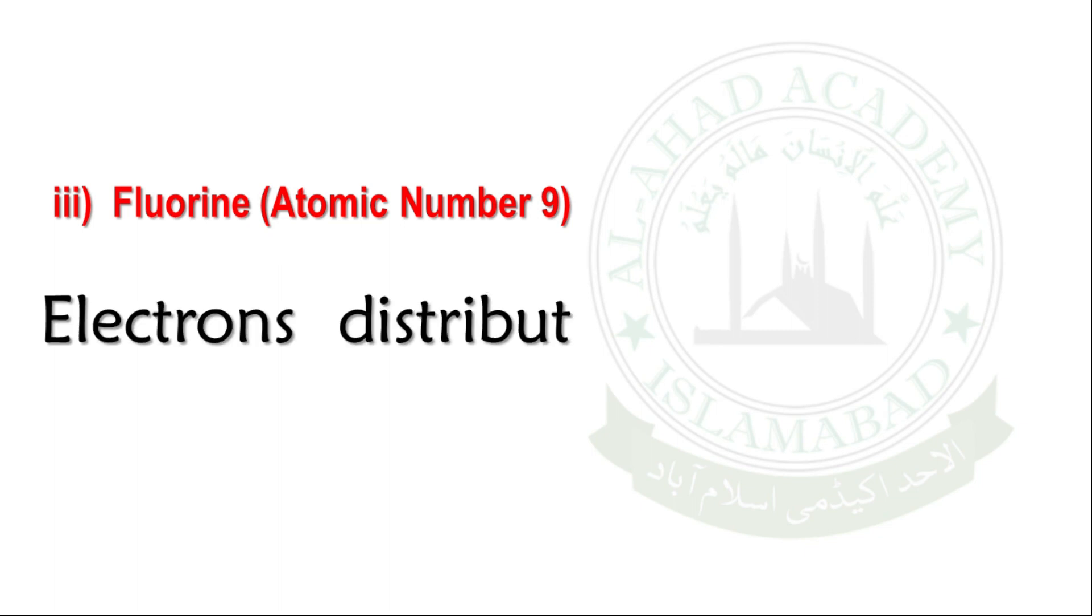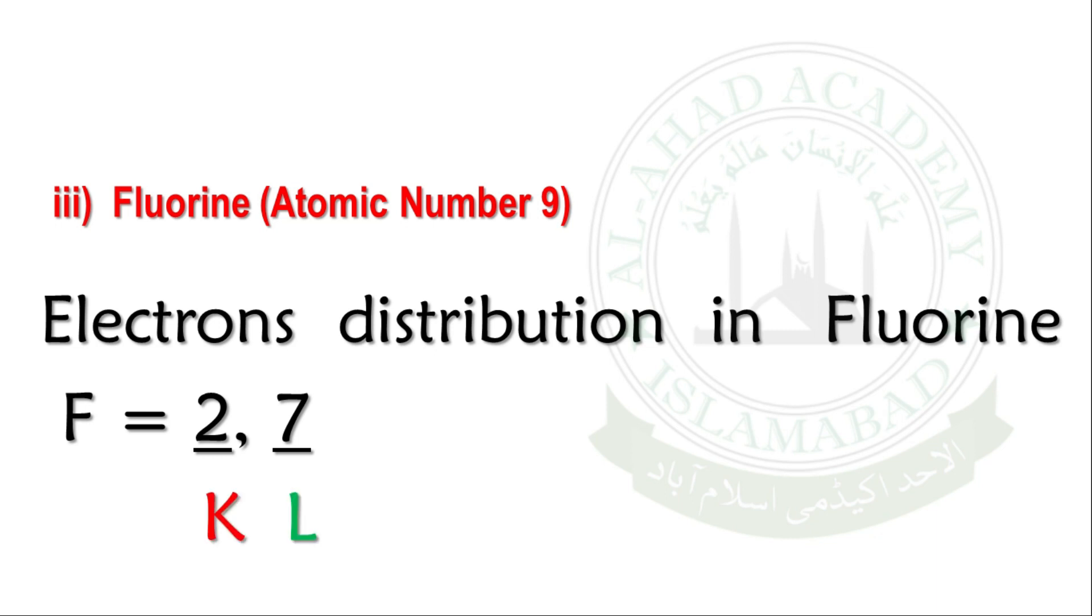Electronic distribution in Fluorine atomic number 9: First shell has 2 electrons, and the second shell has 7 electrons. The valence shell has 7 electrons.